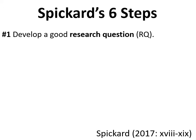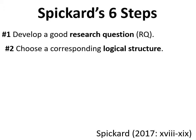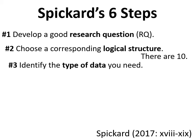The first step was to develop a good research question — one that is specific and identifies roughly what kind of data you need to collect. You then choose a corresponding logical structure, which organizes how you will answer your research question. That was week two, corresponding to chapter two. There we learned 10 logical structures according to Spickard. In the third week, corresponding to chapter three, we identified the type of data needed given a particular logical structure and research question.